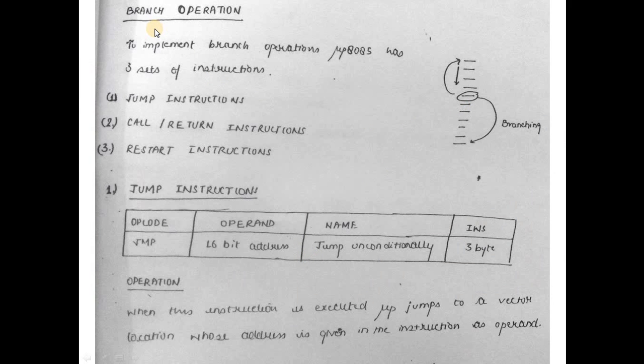Branch operations are three types: jump instructions, call and return, and restart. First, JMP with 16-bit address jumps unconditionally without any condition. It's a three-byte instruction.